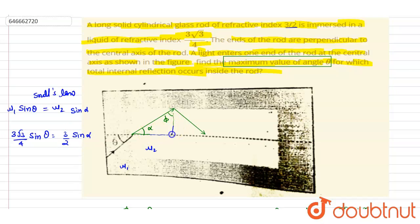So can you see here, this α plus φ is 90 degrees. So α is 90 minus φ.